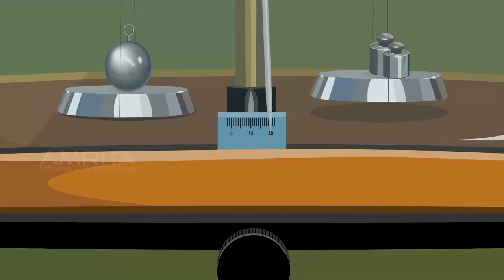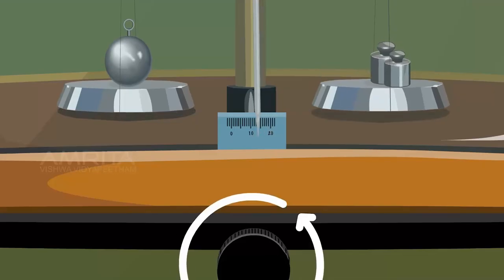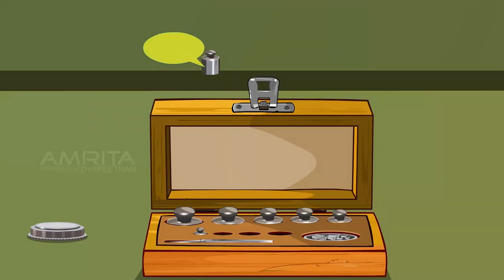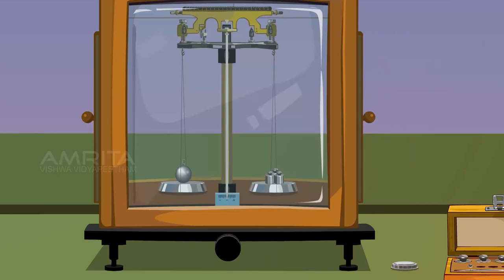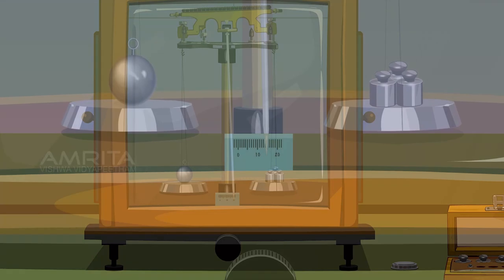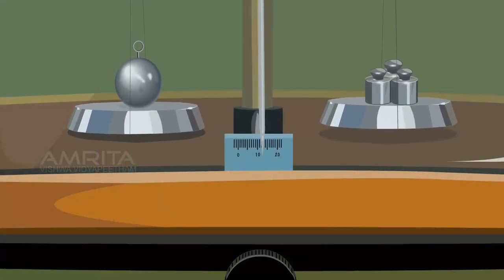The pointer stands in the right. Then we place another 2g weight. Oscillate the balance. Now it begins to oscillate but it's not equal.